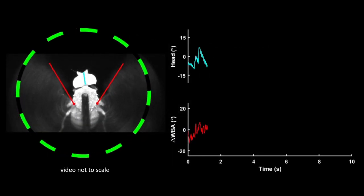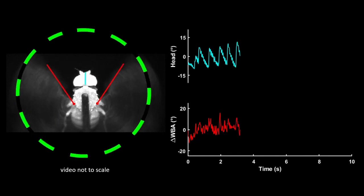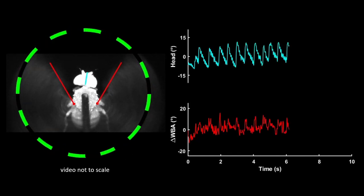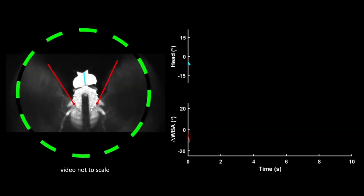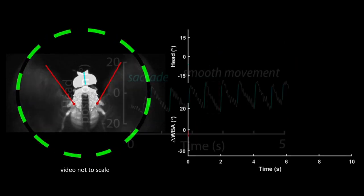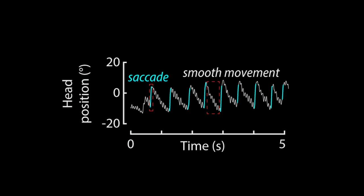Using computer vision, we tracked head and wing movements in response to various visual perturbations. We noted clear periods of smooth movements and saccades in both the head and wing responses. Notably, head saccades made up only 5% of total flight time but had a considerable effect on head movement trajectories.